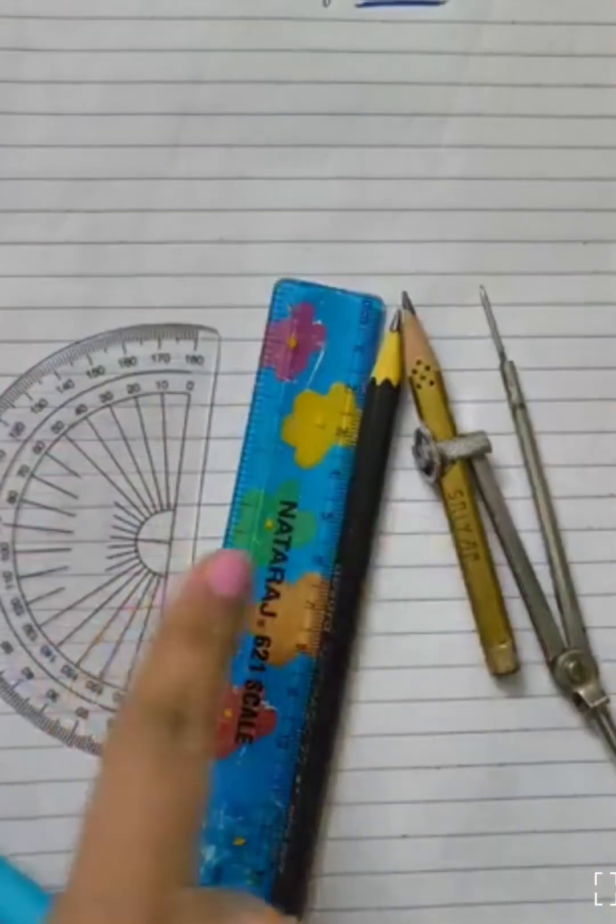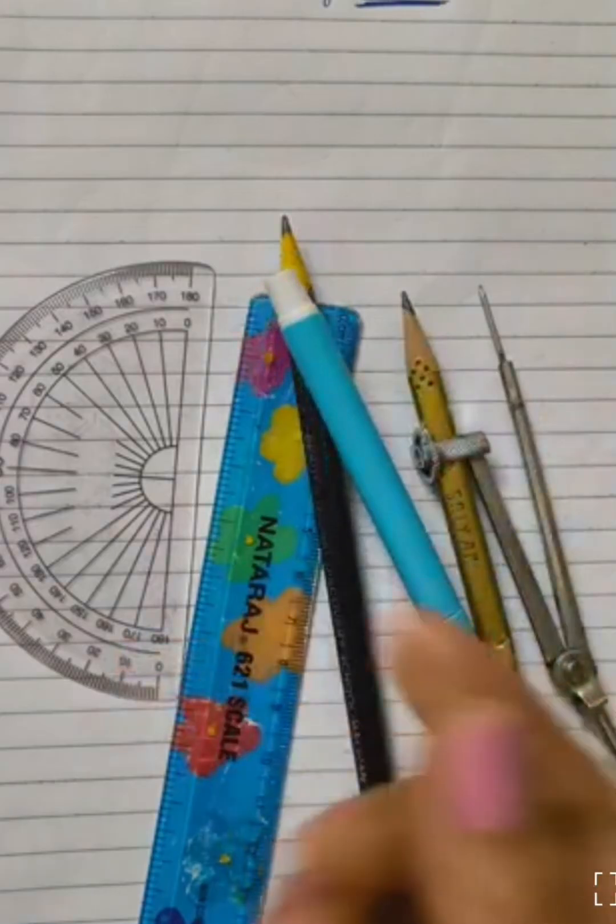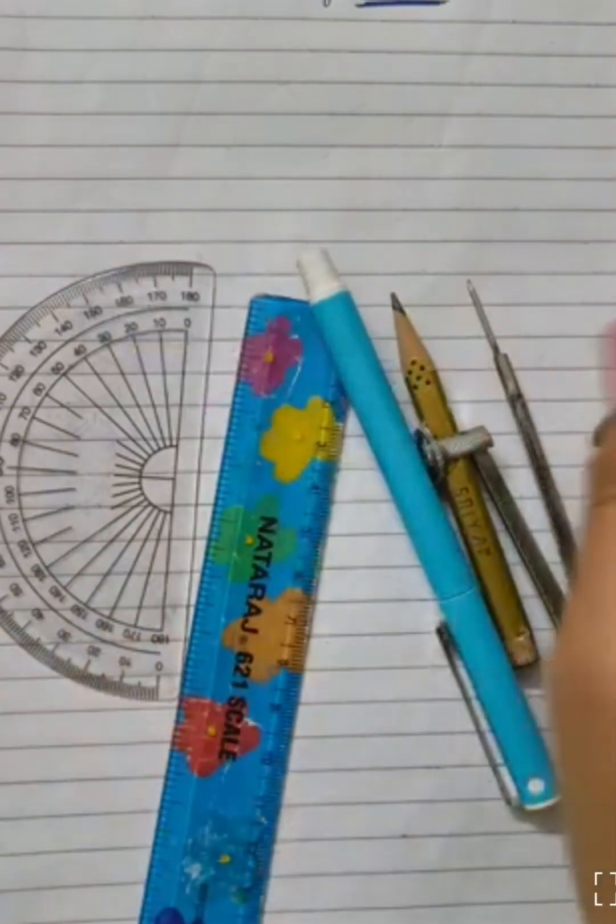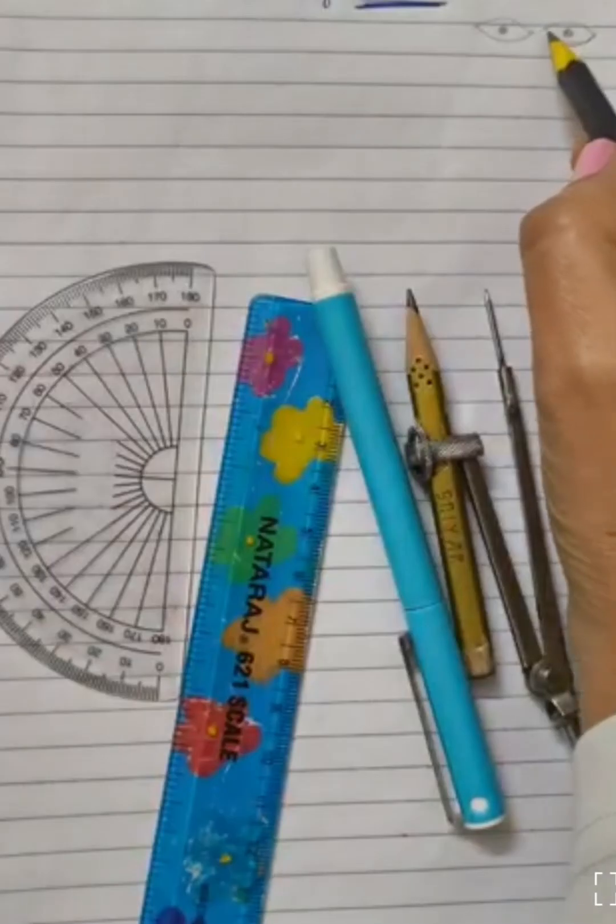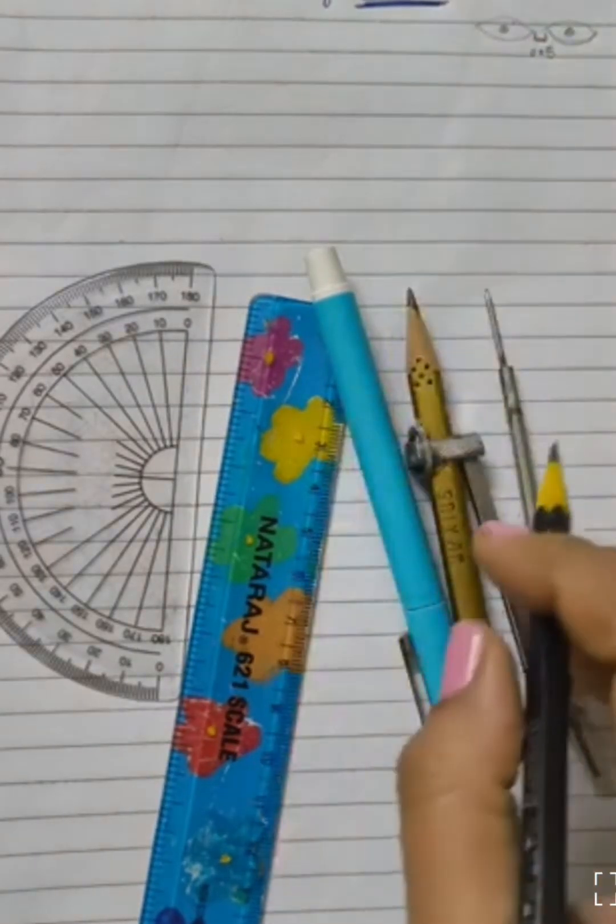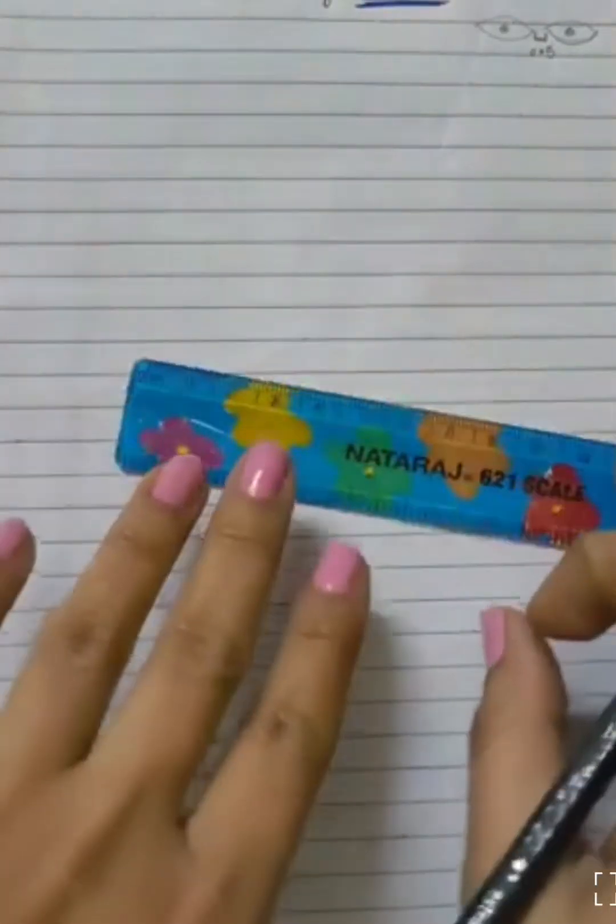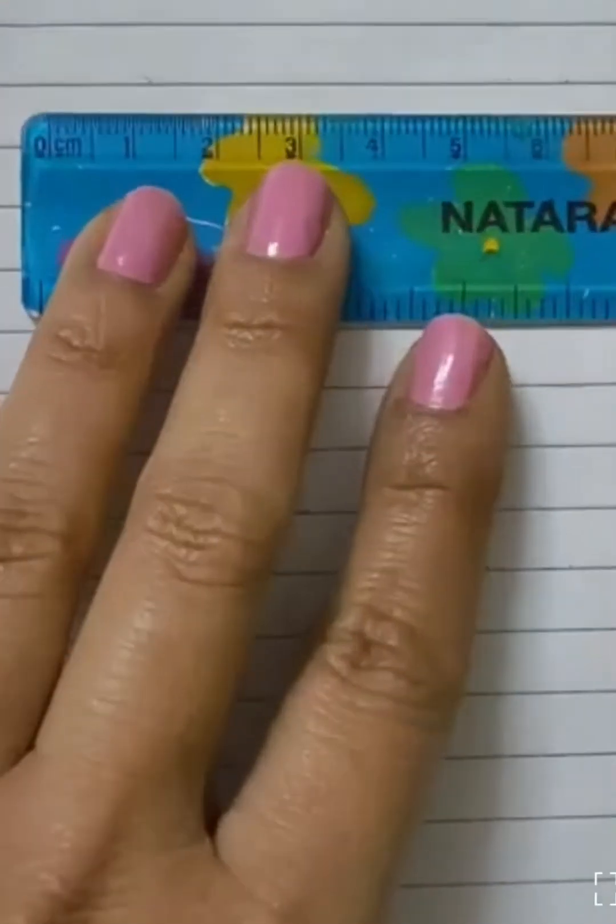So let us see how to draw this using protractor, scale, and compass. As we have seen in the picture, we need two eyes and a gap between them. For this I have drawn a rough sketch.